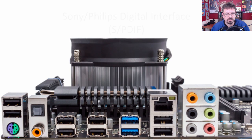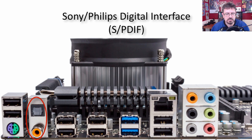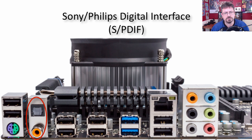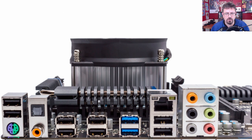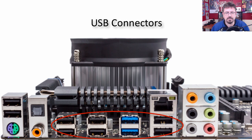Moving over, we see the Sony Philips digital interface. This is a special type of connection for audio — what you're going to get for surround sound, 5.1 or greater. You'll find this on more upper-level motherboards for really good surround sound. Moving over are USB connectors — you've got tons of USB connectors on the back and front of the computer. We have a new USB standard coming out; this is an older USB standard we're seeing here.